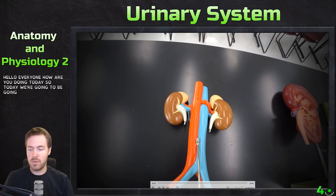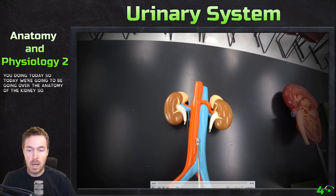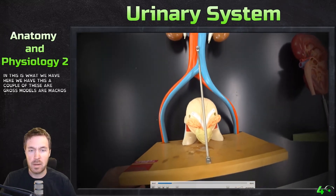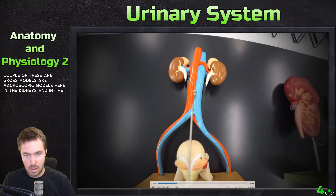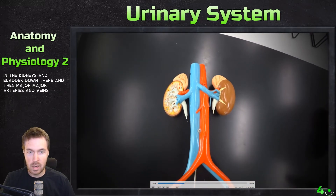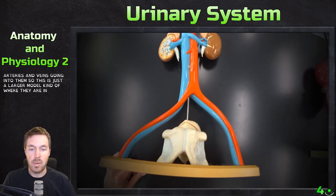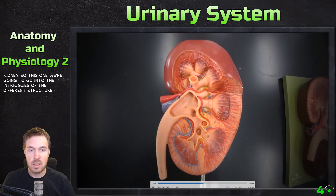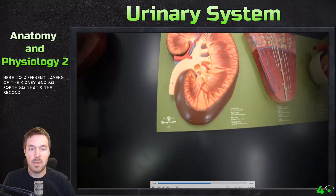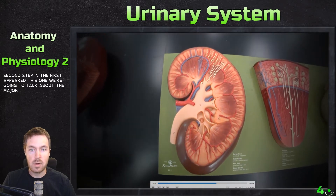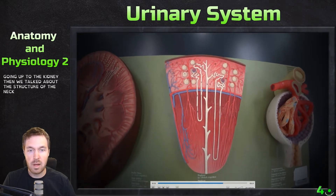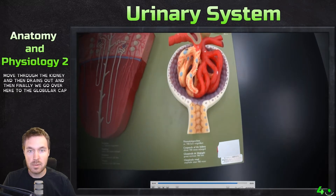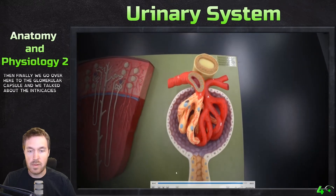Hello everyone, today we're going over the anatomy of the kidney. I took a video of the models in the laboratory. We have a couple of macroscopic models here: one showing the kidneys, ureters, and bladder with major arteries and veins; a detailed kidney model showing internal structures; a model of the major arteries and veins; the nephron structure; and finally the glomerular capsule in detail.